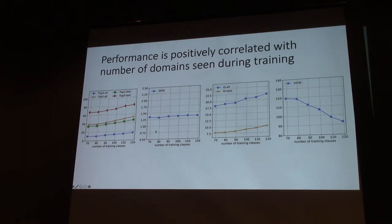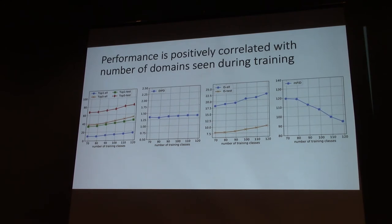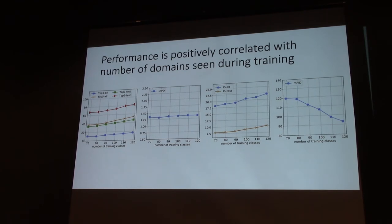We used metrics based on perceptual loss to quantify whether translation outputs maintain similar pose to the input, along with inception score and FID. All metrics are positively correlated with both the number of training classes and the number of example images given at test time.